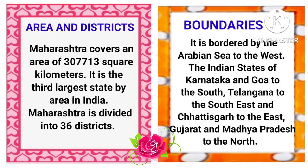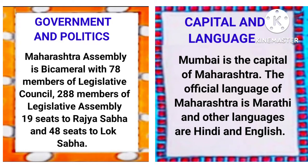Government and politics: Maharashtra assembly is bicameral with 78 members of Legislative Council, 288 members of Legislative Assembly, 19 seats to Rajya Sabha and 48 seats to Lok Sabha. Capital and language: Mumbai is the capital of Maharashtra. The official language of Maharashtra is Marathi and other languages are Hindi and English.